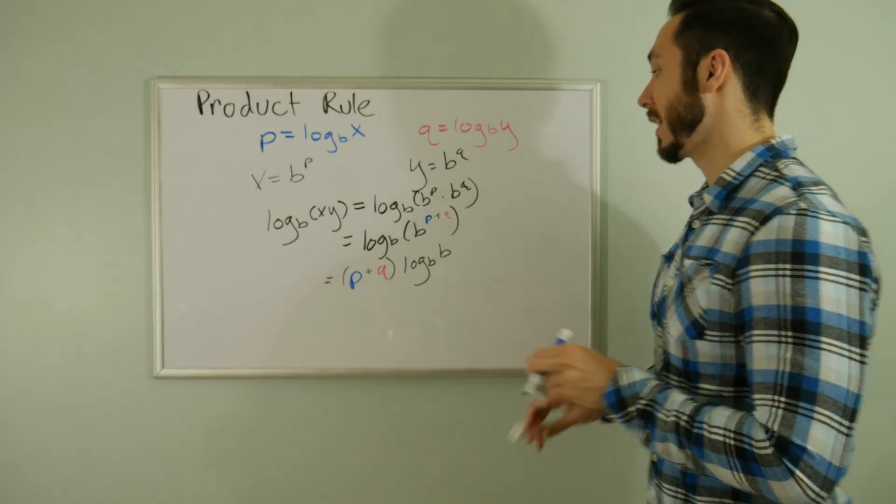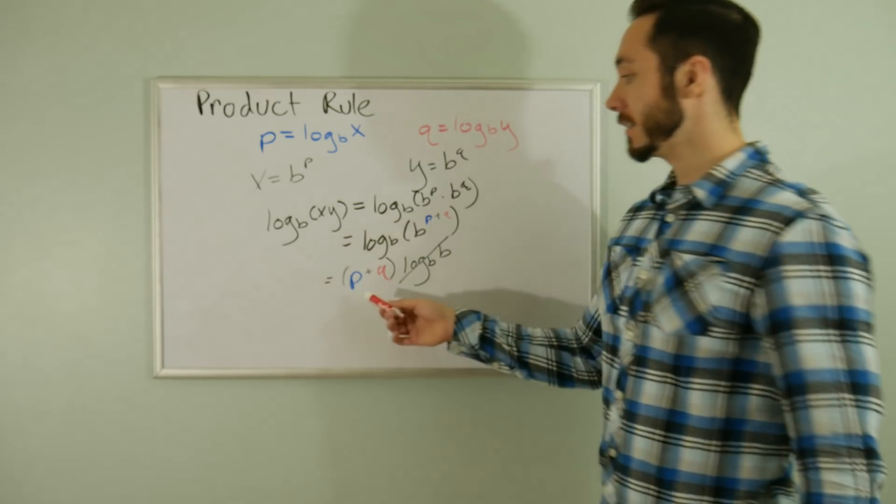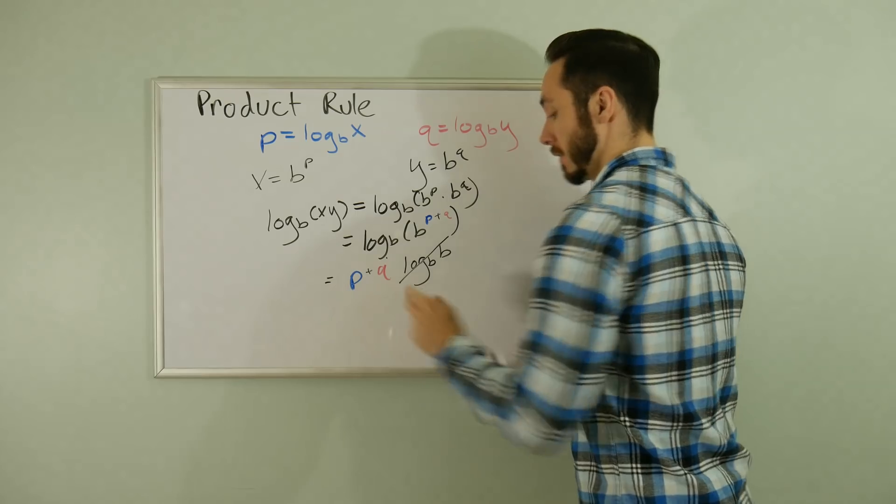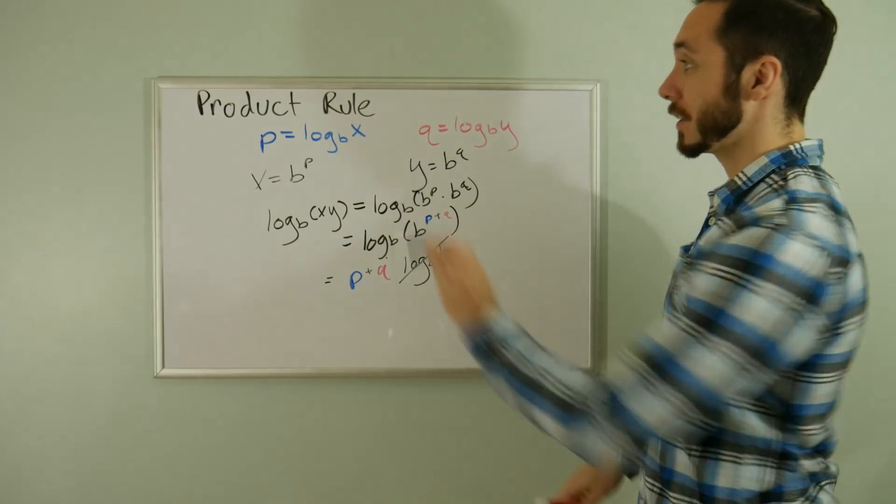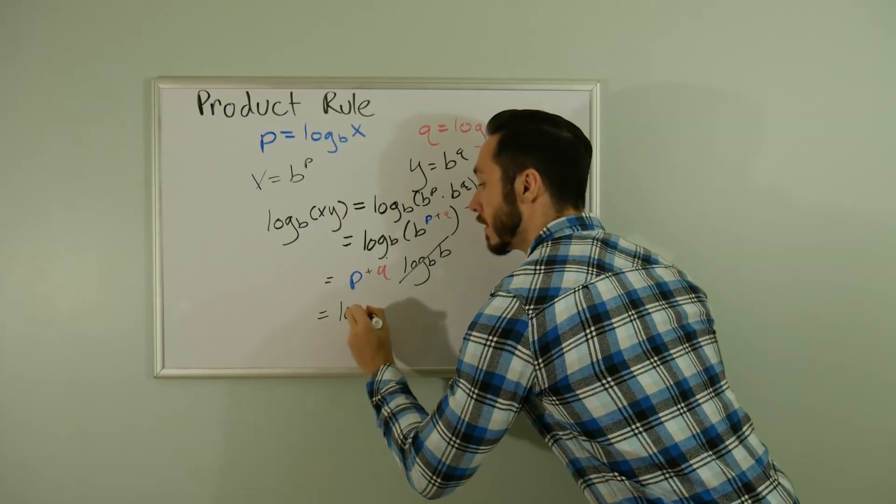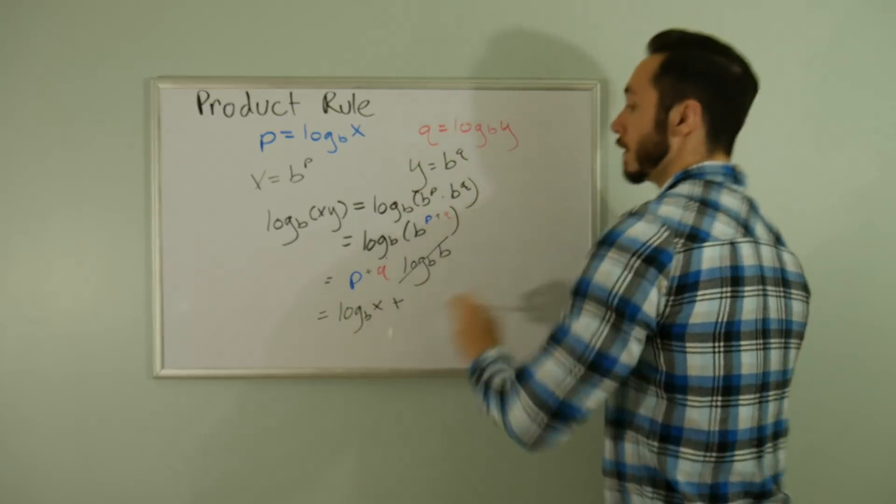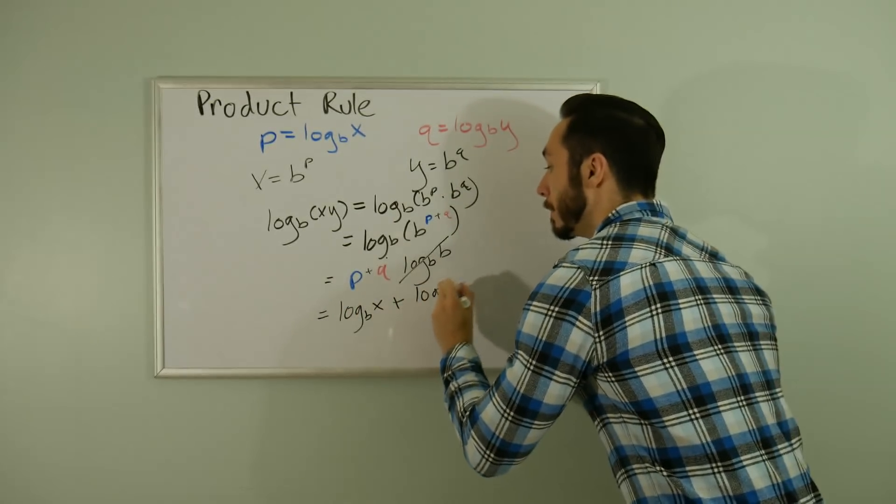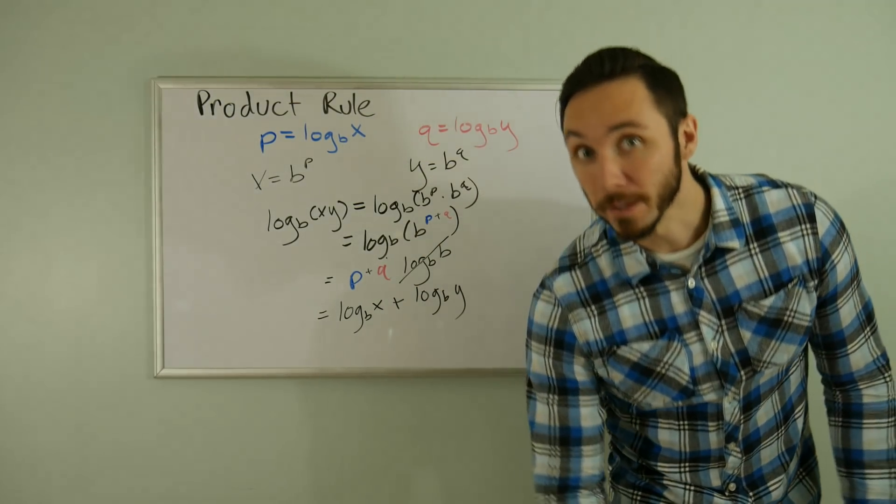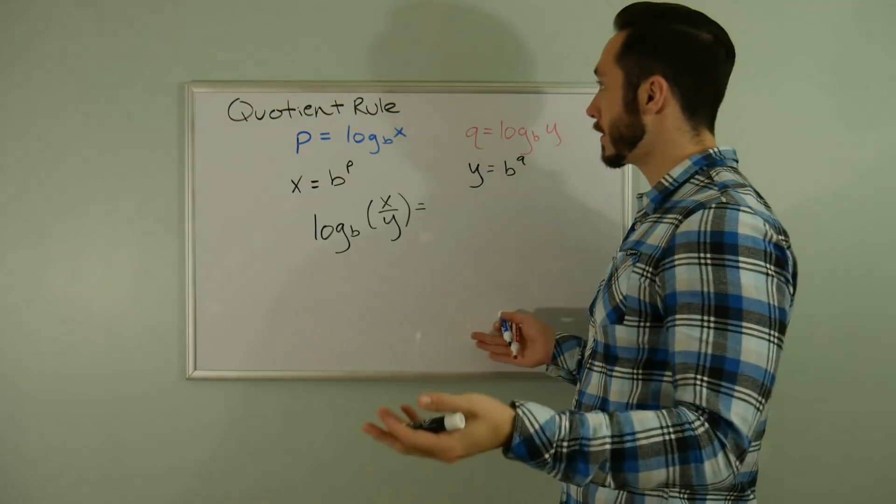Lastly, I just have P plus Q. What is P? What is Q? I have them written over there. P is log base B of X and Q is log base B of Y. That is the second of three - that is the product rule!